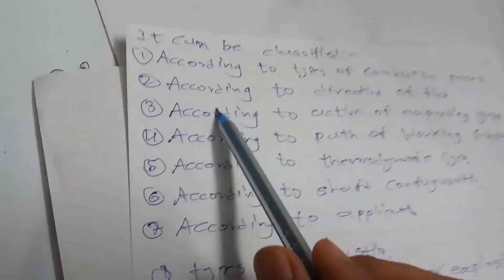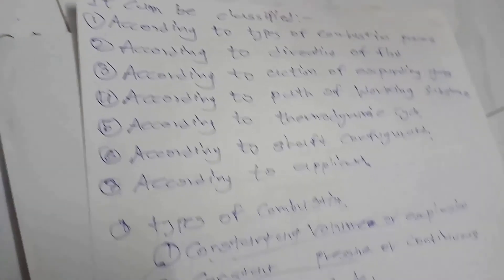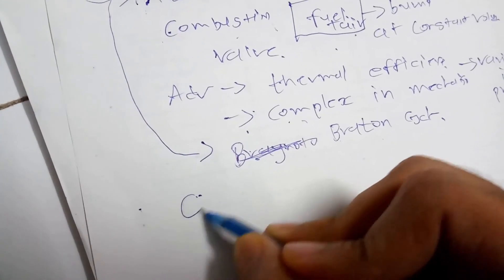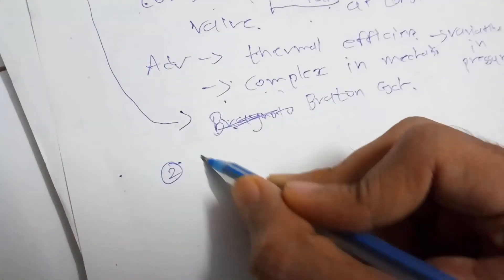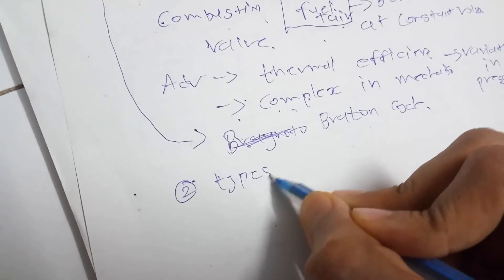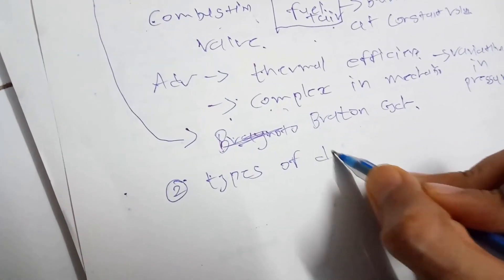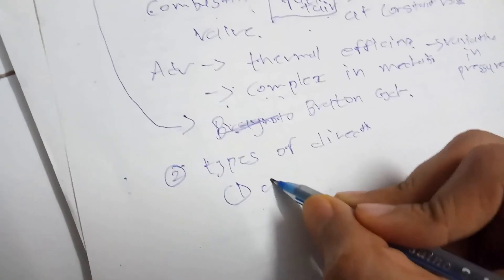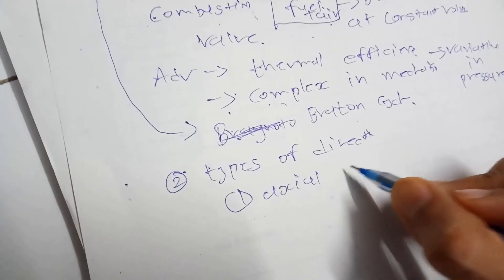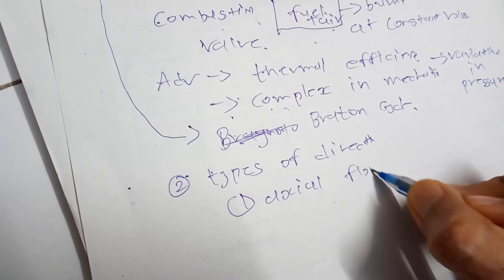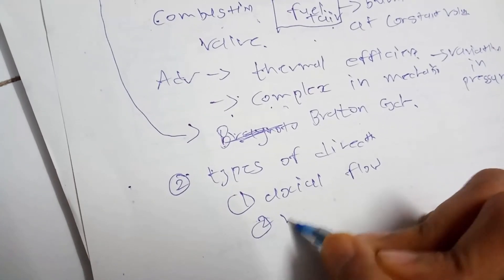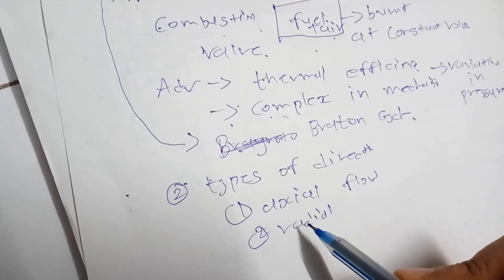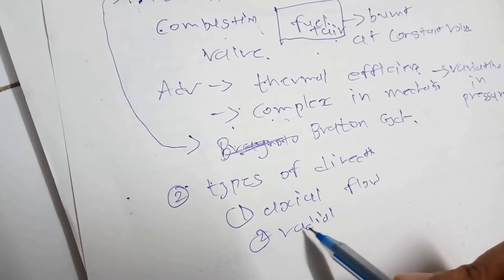The second classification is according to direction of flow. There can be two types of flow direction in a gas turbine: the first is axial flow, where flow moves in the axial direction, and the second is radial flow.